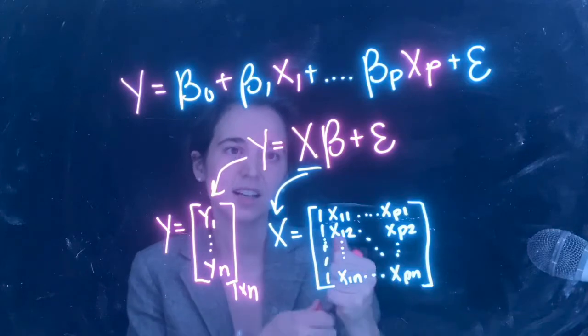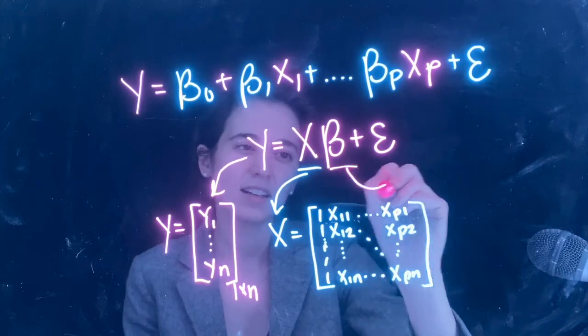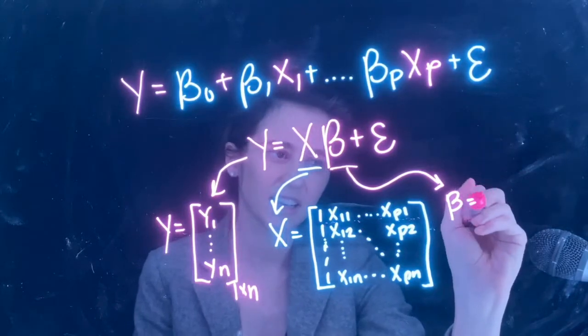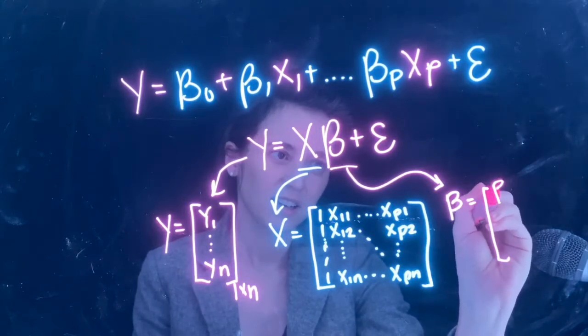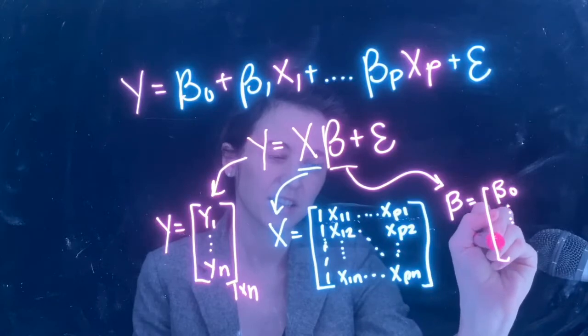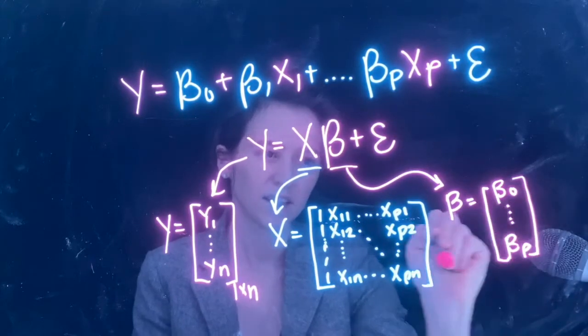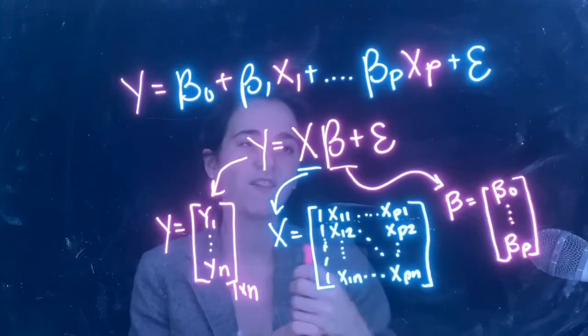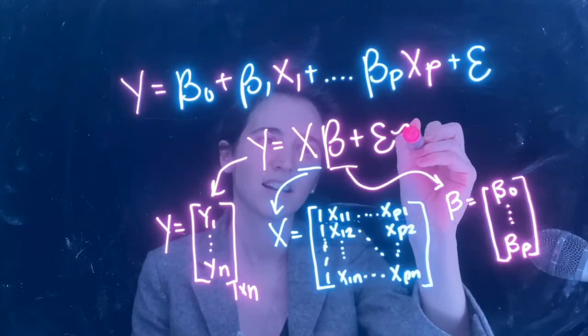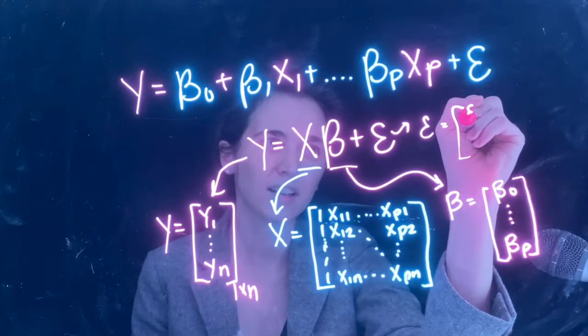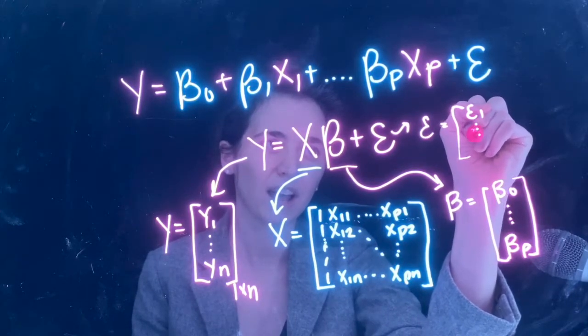Now we've got beta, and so beta is also a vector here, and we start with beta 0 all the way to beta p. And then finally we have epsilon, which is also a vector, and so that goes from 1 all the way to n.